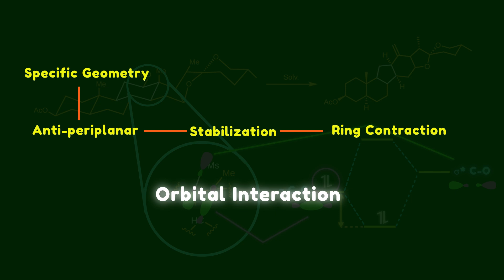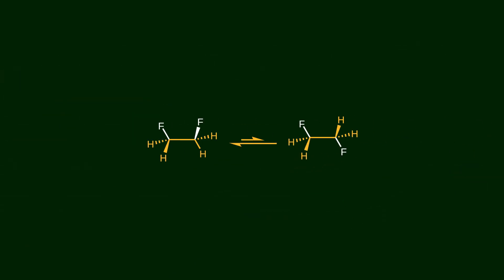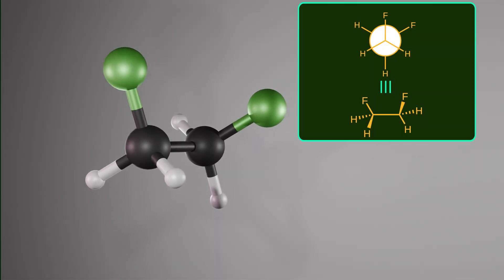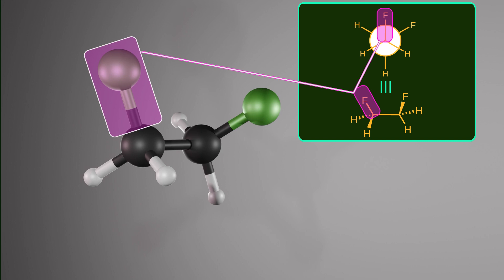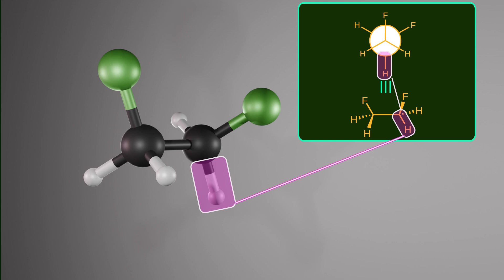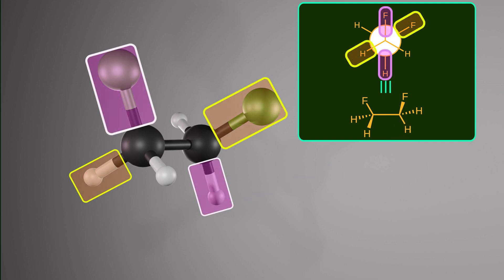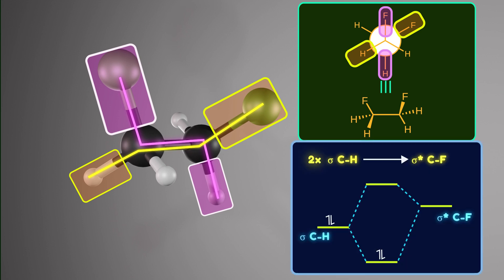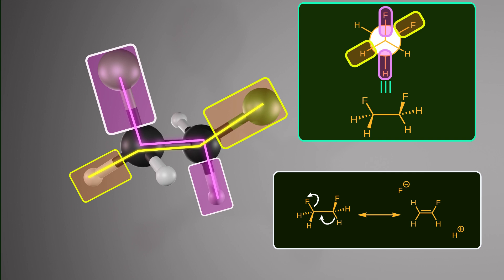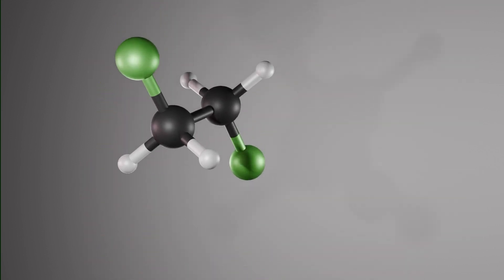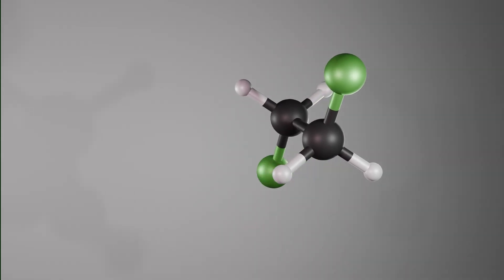The same principle is true for 1,2-difluoroethane. The gauche conformer is 1.8 kilocalories per mole more stable than the anti-conformation. In the gauche conformation, the C–F bond is a good acceptor because of the high electronegativity of fluorine, and the C–H bond acts as a donor. Two C–H bonds are anti-periplanar to two C–F bonds, so bonding electrons from the C–H bonds interact with the empty anti-bonding orbital of the C–F bonds. In contrast, in the anti-conformation, there is no C–H bond anti-periplanar to any C–F bond, so there is no stereoelectronic effect.